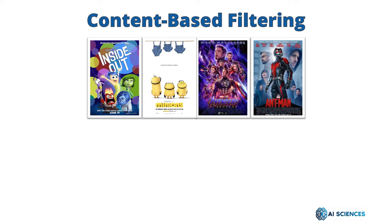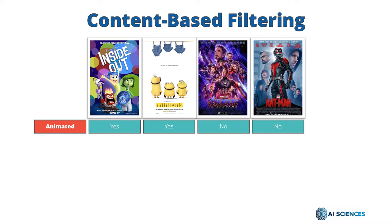In content-based filtering we always consider only the features or properties of our contents or items. For example, for these four movies, whether these movies are animated or not. Here Inside Out and Minions are animated movies but Avengers and Ant-Man are not animated movies.